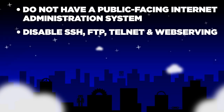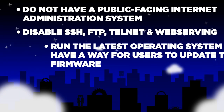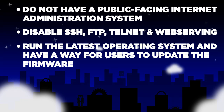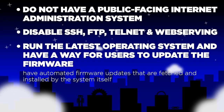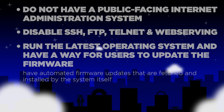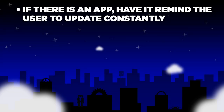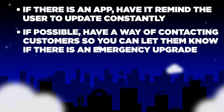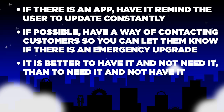Run the latest operating systems and have a way for users to update the firmware, or have an automatic update that can be fetched and installed by the system itself. If there's an app, have it remind the user to update constantly. And if possible, have a way of contacting customers so you can let them know if there's an emergency upgrade. It's better to have it and not need it than need it and not have it.